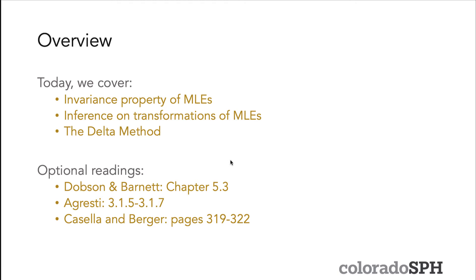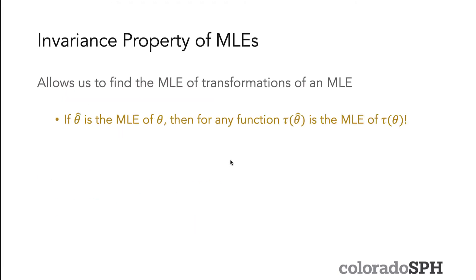Today we cover the invariance property of MLEs. The invariance property allows us to find the maximum likelihood estimator of transformations of an MLE. This property states that if θ̂ is the MLE of θ, then for any function τ(θ), τ(θ̂) is the MLE of τ(θ). This is a really useful property. I'm not going to go through the proof, but you can find it in Casella and Berger.